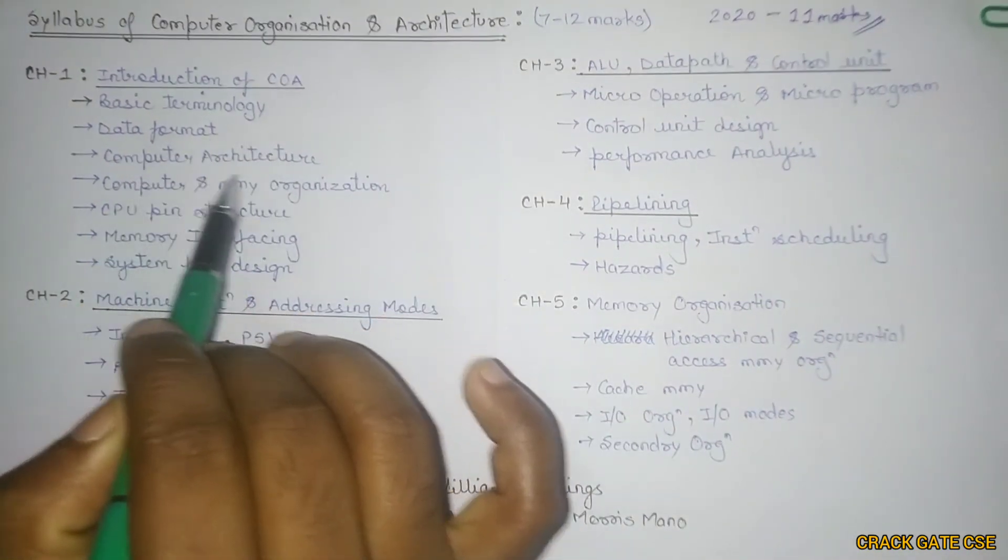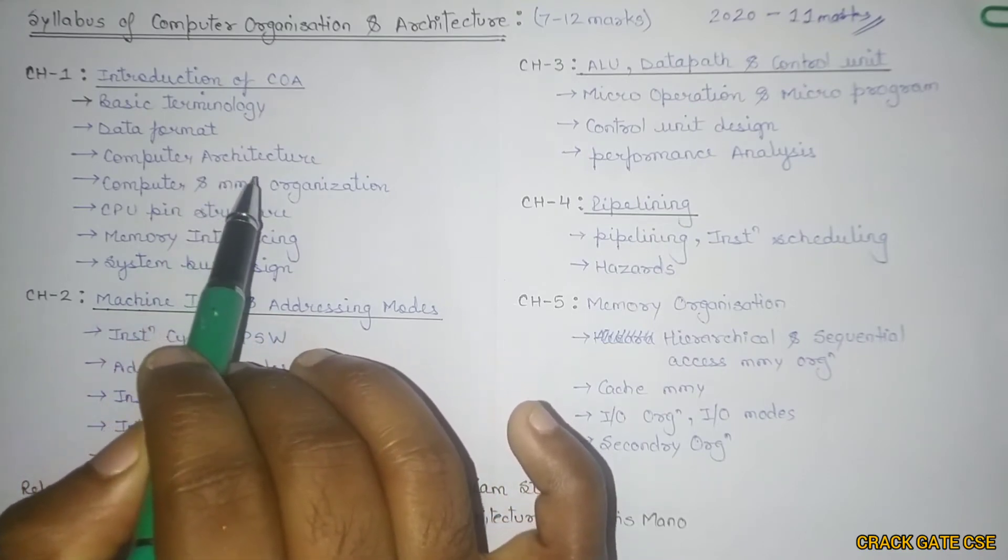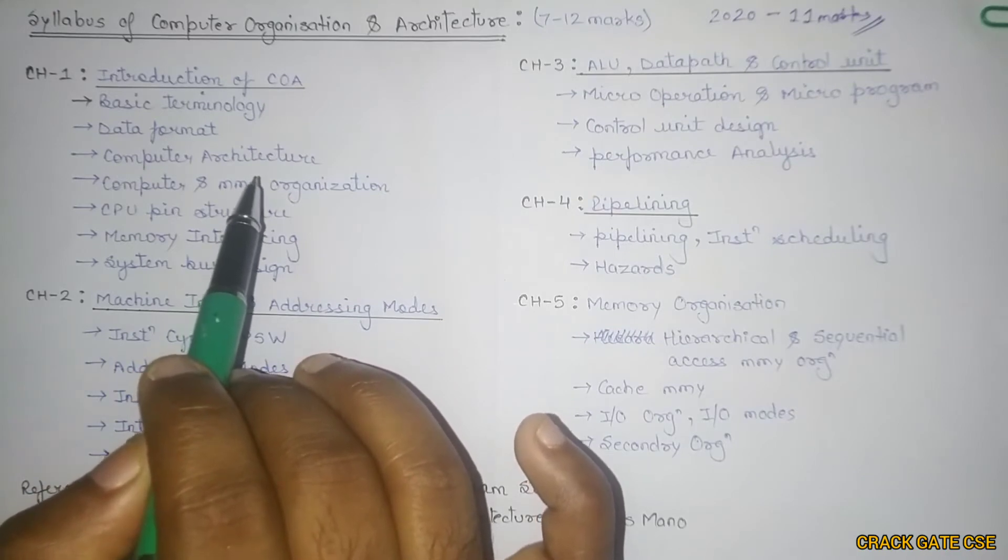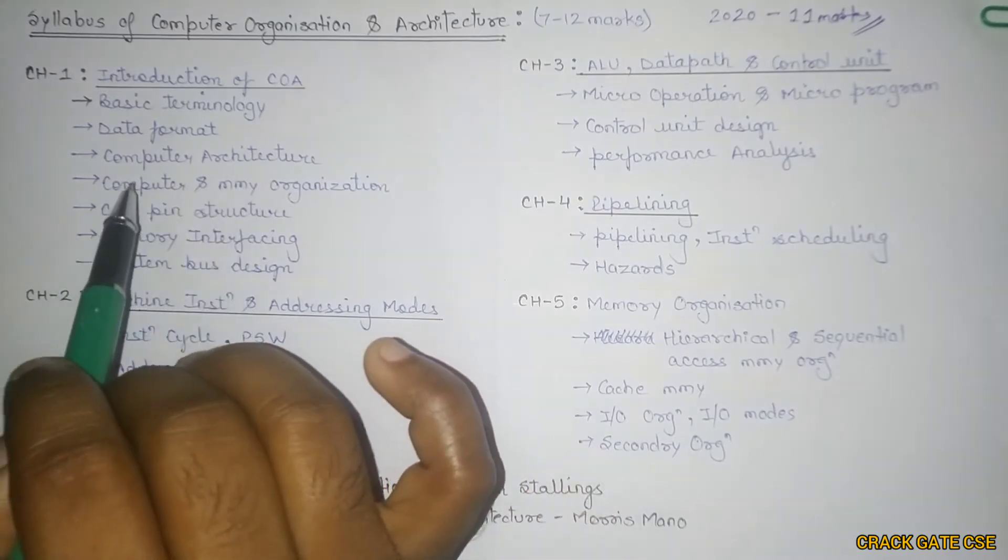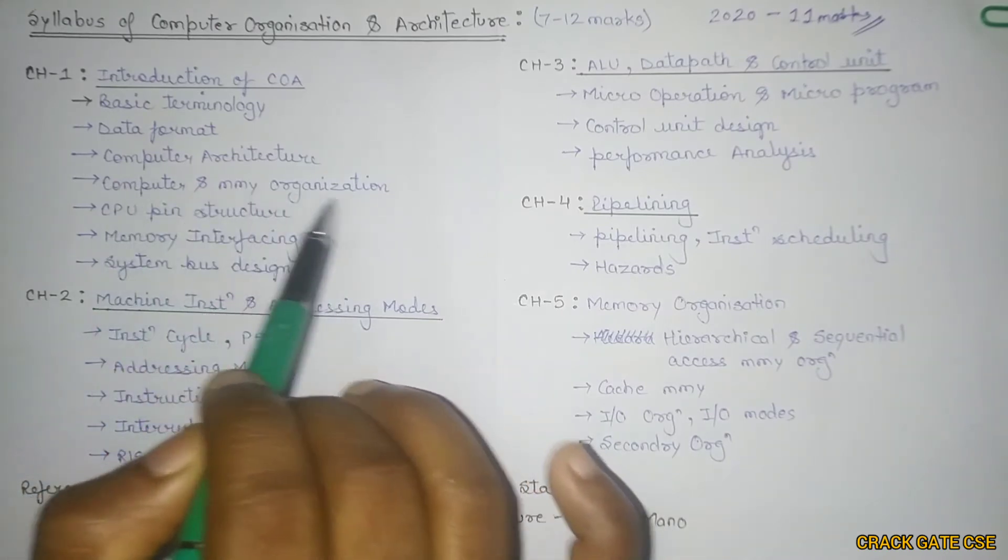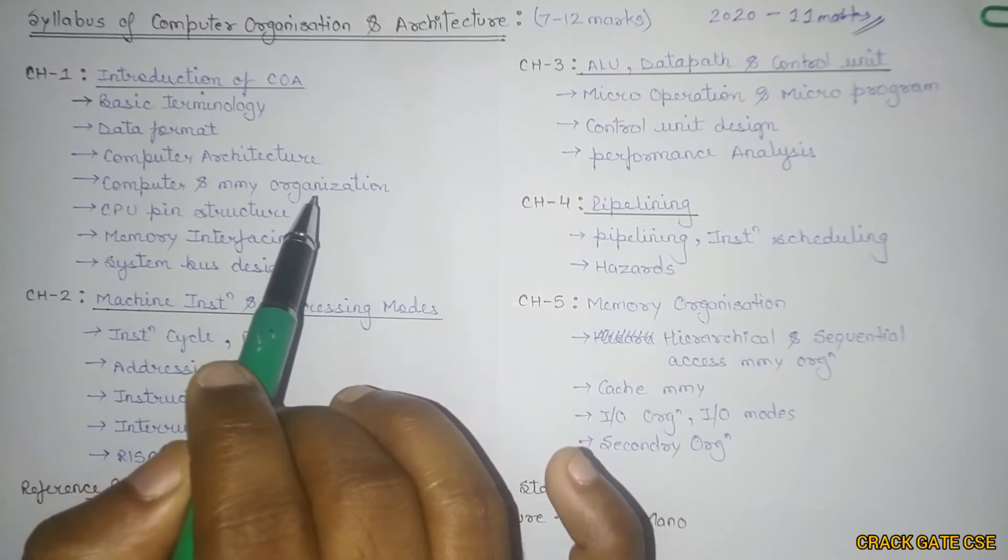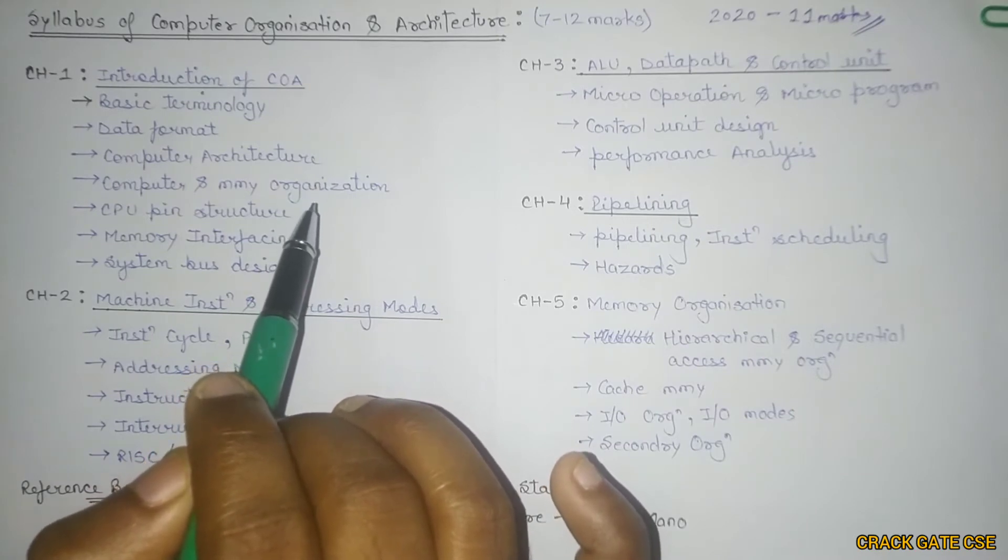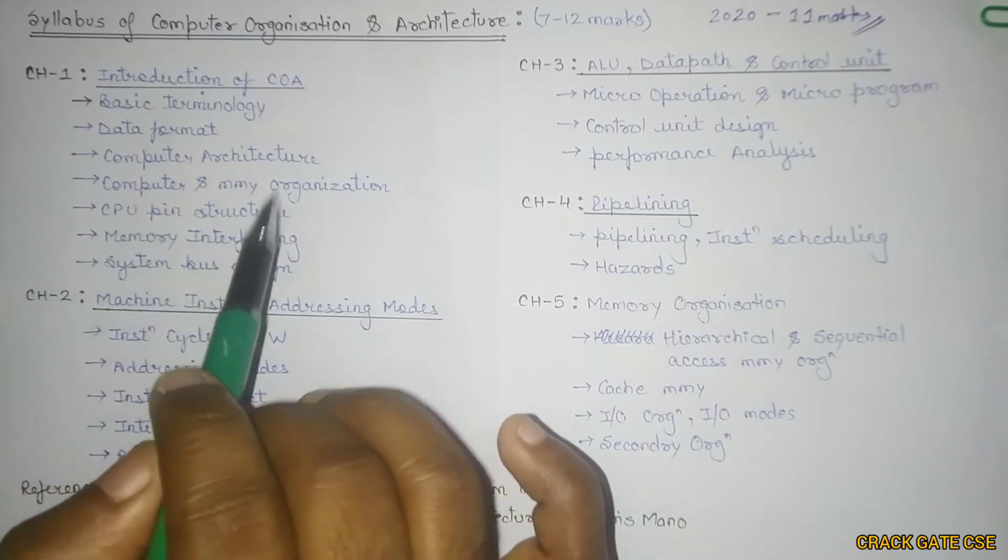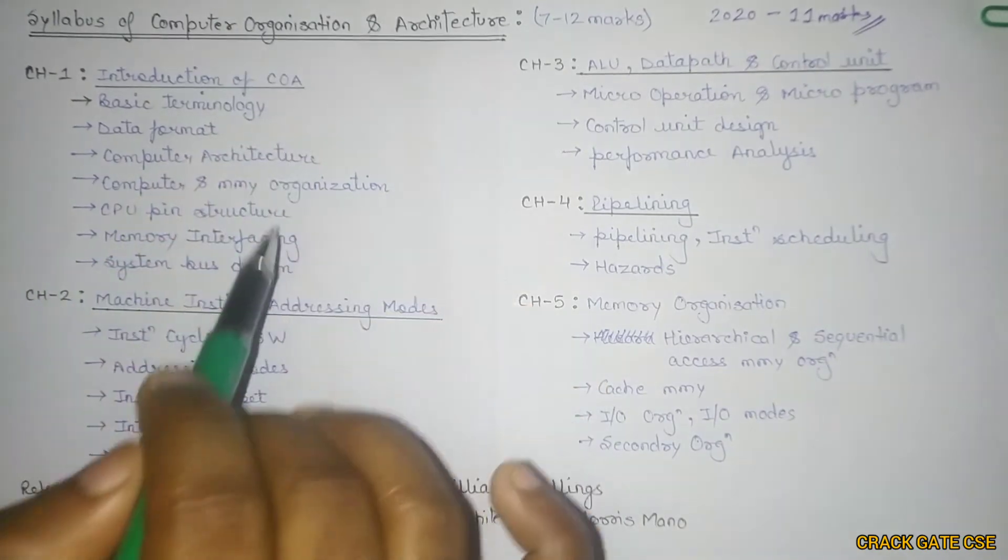After this, we'll move on to computer architecture. We'll understand two kinds of architecture: von Neumann architecture and Harvard architecture. Then we'll move on to computer and memory organization. In this, we'll understand byte addressable memory, word addressable memory, along with some questions. If there are previous questions available on this topic, I will discuss those also. Then we'll move on to CPU pin structure, memory interfacing, and system bus design.